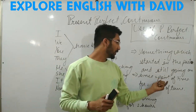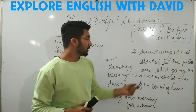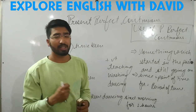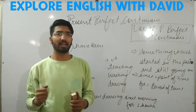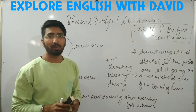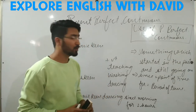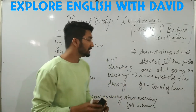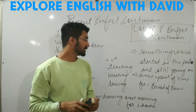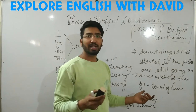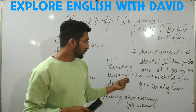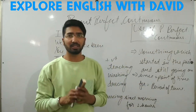So let's understand 'since' and 'for'. We use since and for to add time. 'Since' is for point of time and 'for' is for period of time. Point of time means a specific moment — for example, since 1945, since 1947. When we indicate a specific point in time, we use 'since'. And 'for' is for period of time — a duration.